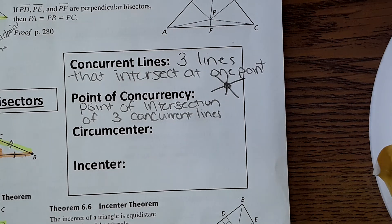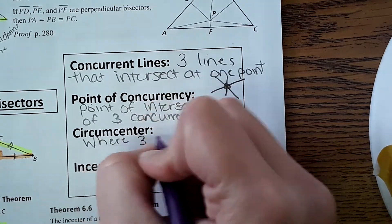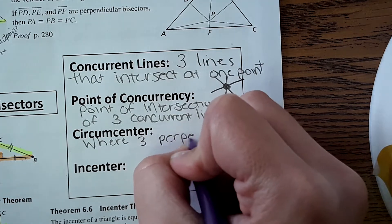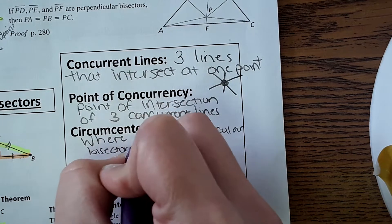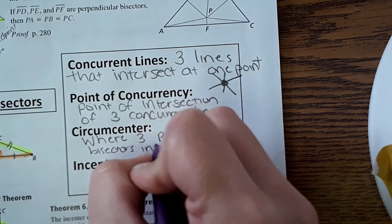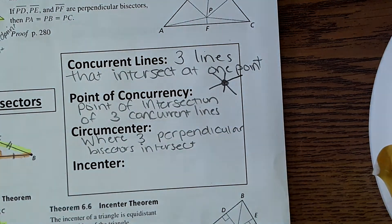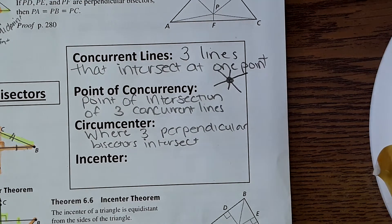We also have circumcenter and incenter, and this is where we bring in the perpendicular bisector and angle bisector. A circumcenter is where three perpendicular bisectors intersect, and the incenter is where three angle bisectors intersect.